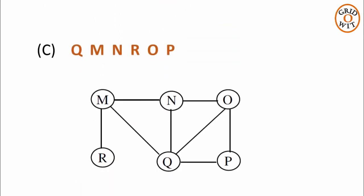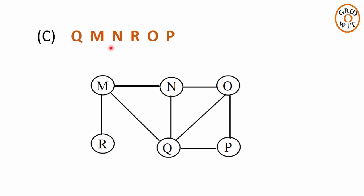Now let us check the traversal sequence given in option C. First, node Q is traversed. The direct neighbors of node Q are M, N, O and P. These 4 direct neighbors of node Q should be traversed first in any order before going to the next level of neighbors. In the traversal sequence, next node is M — no problem, M can be traversed. Next node is N — again no problem, N can be traversed. Next node is R. It is not possible to traverse R in BFS before traversing all the neighbors of node Q; that is, R cannot come in the traversal sequence before M, N, O and P when the first node traversed is Q. So the traversal sequence given in option C is also wrong.